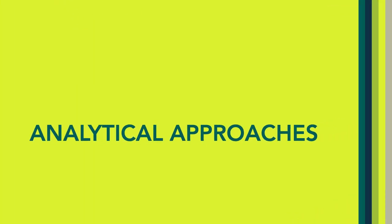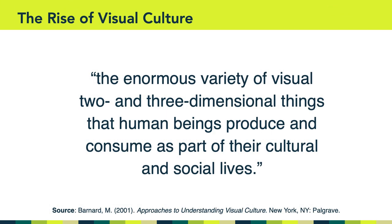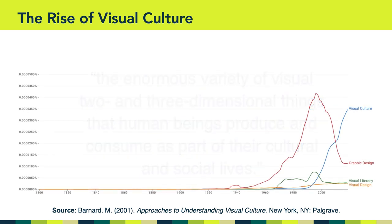In last week's reading, Callow cited Bernard, who defined visual culture as the enormous variety of visual two-dimensional and three-dimensional things that human beings produce and consume as part of our cultural and social lives. This particular graph from Google's Ngram viewer shows the rise of the phrase 'visual culture' from 1800 to 2019. As you can see, visual culture has gone up and up steadily since the 1990s, surpassing visual literacy, visual design, and even graphic design, which has declined in recent decades.